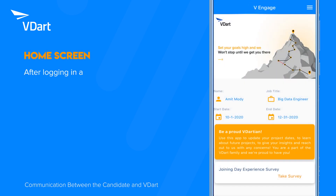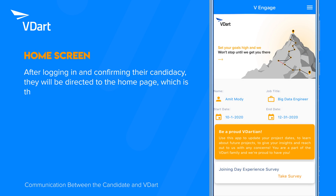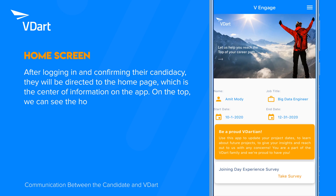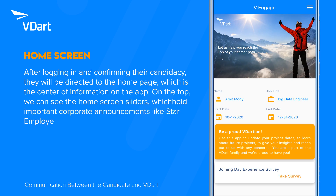After logging in and confirming their candidacy, they will be directed to the home page, which is the center of information on the app. On the top, we can see the home screen sliders, which hold important corporate announcements like Star Employee of the Month, opportunities and organizational information.